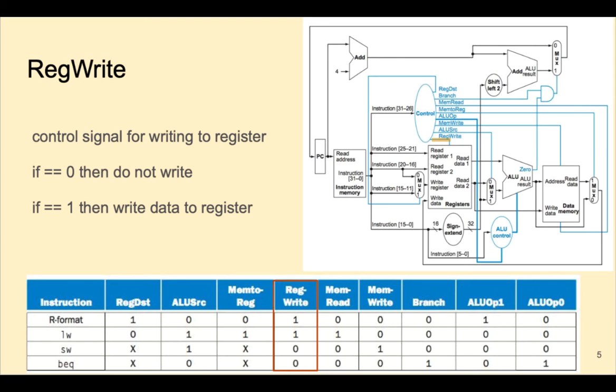The regwrite signal is one for instructions that write back to the register file, like load word and R instructions, and it's zero for instructions that do not write back to the register file, store word and branch equal.